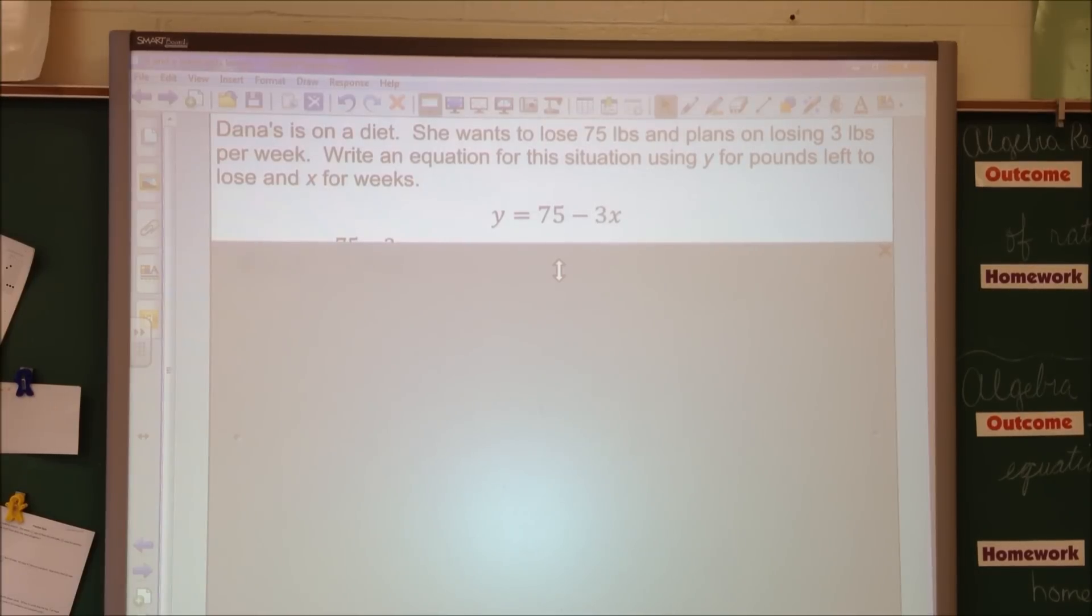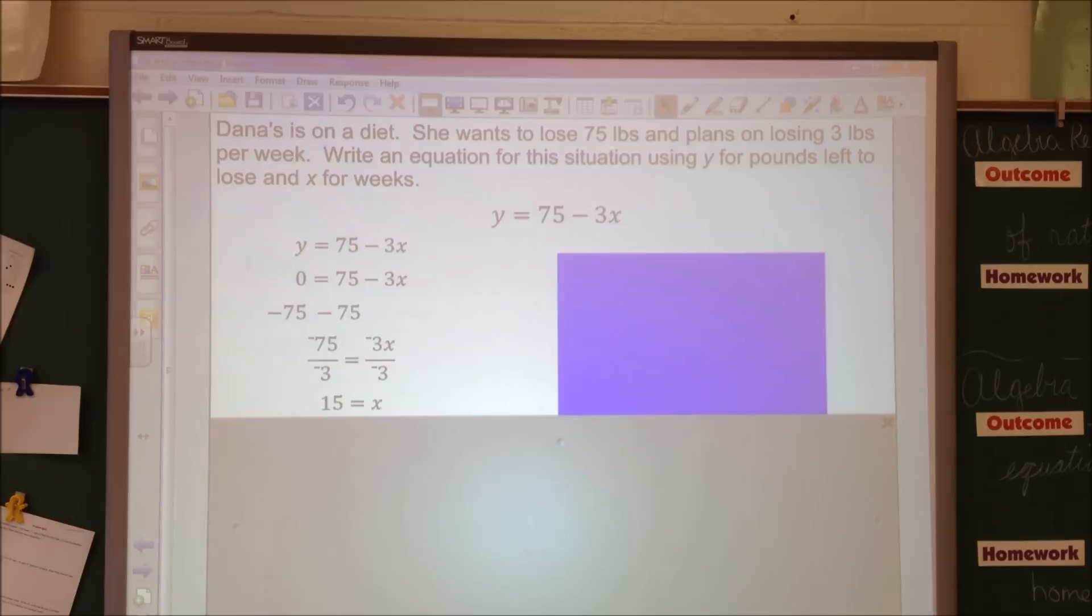I'm going to find my x-intercept because we're going to talk about what that x-intercept means in real life. Remember, x-intercept, y equals 0. So I'm going to plug that in. I can't just cover it up this time. So I'm going to plug in 0. I'm going to take away 75 from both sides. And I get negative 75 equals negative 3x. Divide both sides by negative 3. And I get positive 15.